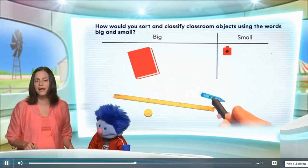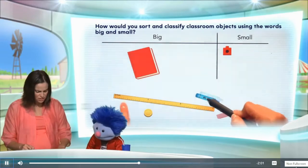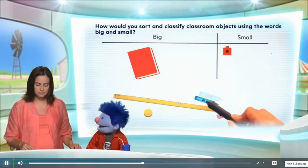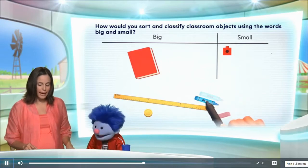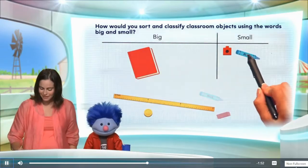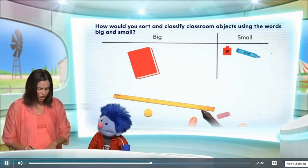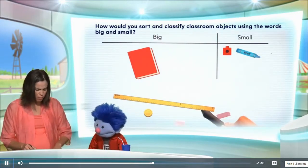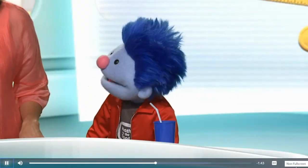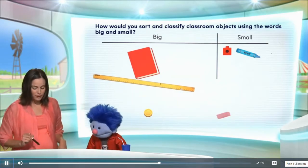How about the crayon? Look at the yardstick and the crayon — the crayon is much smaller than the yardstick, so I would say the crayon is small. And since we were talking about the yardstick, what do you think? Is the yardstick big or do you think it's small? It's very long, so would that make it big? I would say it goes in the big category.